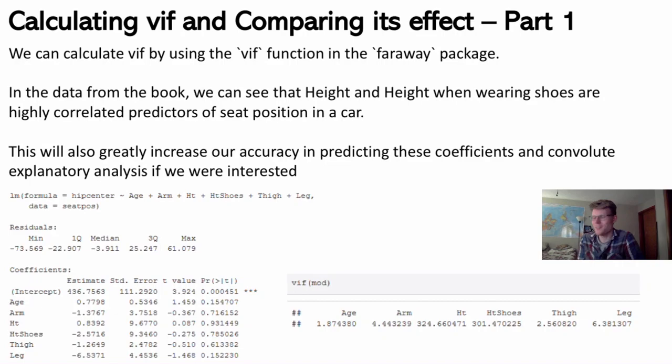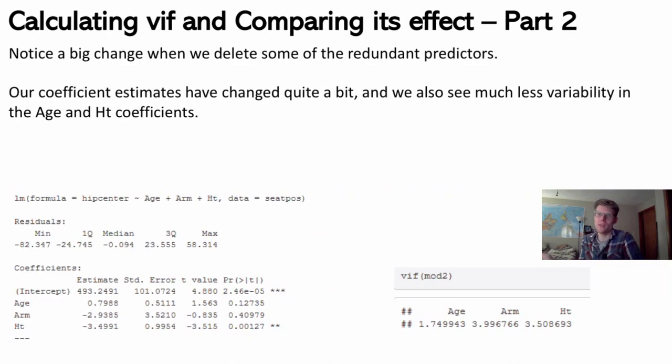There are a couple of other predictors we could also drop that are relatively highly correlated. I made a new model holding on to just three of these variables, and the VIFs are now quite a bit more reasonable. The standard error for each variable is also a bit lower — for height, the standard error is about nine times lower, meaning we have a much more accurate beta coefficient estimate for the relationship between height and seat position.